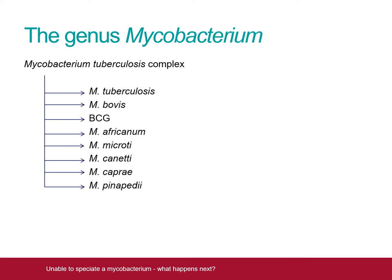Mycobacterium africanum is isolated relatively infrequently. Some of these species are less easily identified by WGS, but identification to the complex level is almost always achieved. Mycobacterium leprae, the causative agent of leprosy or Hansen's disease, stands distinct from the tuberculosis complex. It is rarely cultured in the UK, though cases of leprosy are still diagnosed in patients who have spent significant time in at-risk areas.